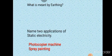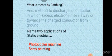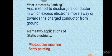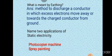Next question: what is meant by earthing? Earthing is the process to discharge a conductor in which excess electrons move away or towards the charged conductor from the ground to neutralize it. Name two applications of static electricity: photocopier machine and spray painting use the principle of static electricity.